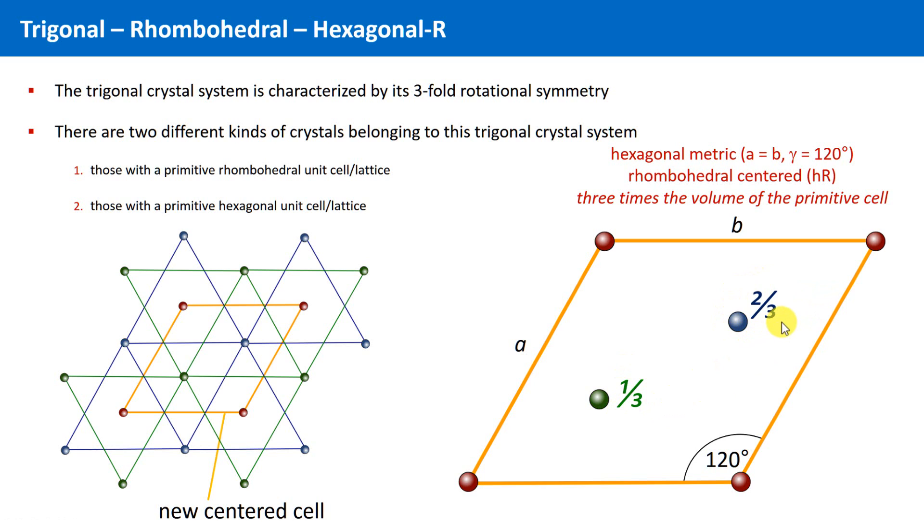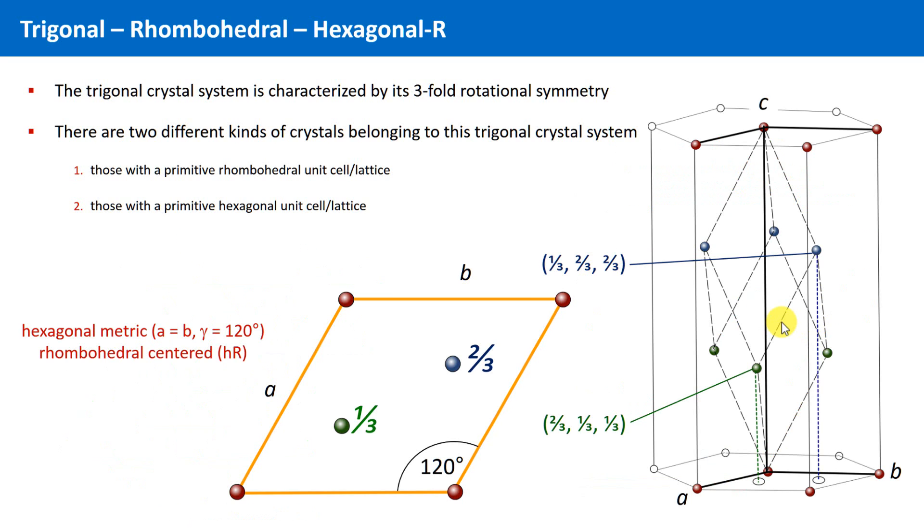Okay, and here is a scheme, in which both unit cells are shown, so that you can see how these cells are connected by each other. The original rhombohedral cell, and the new rhombohedral centered cell with the hexagonal metric.